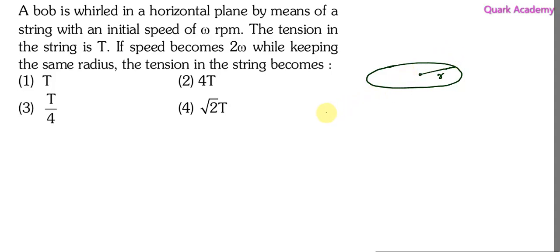It is initially moving with angular speed omega, then it is going to move with angular speed 2 omega. When it is moving with angular speed omega, the tension in the string is T. By keeping the radius the same, if we increase the angular speed to 2 omega, then what will happen to the tension? We need to find this.